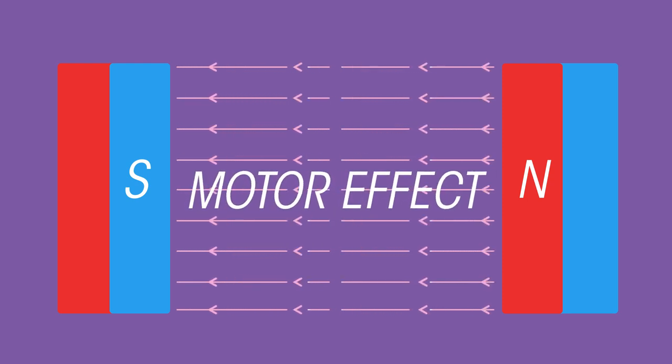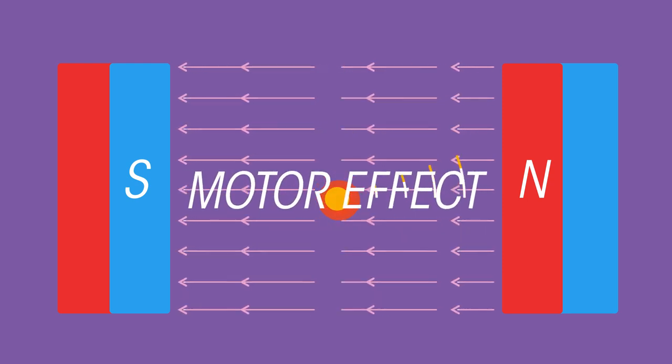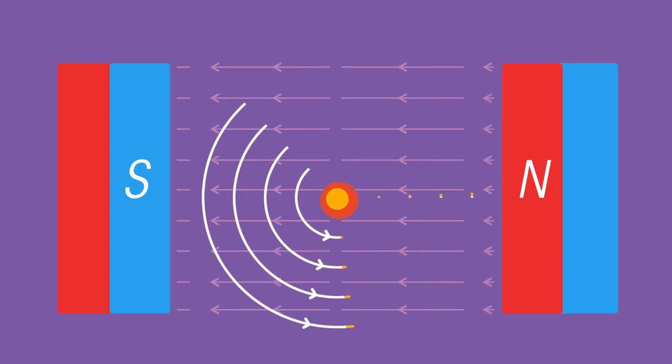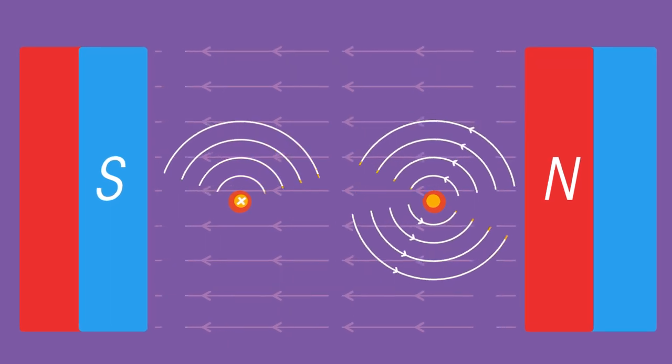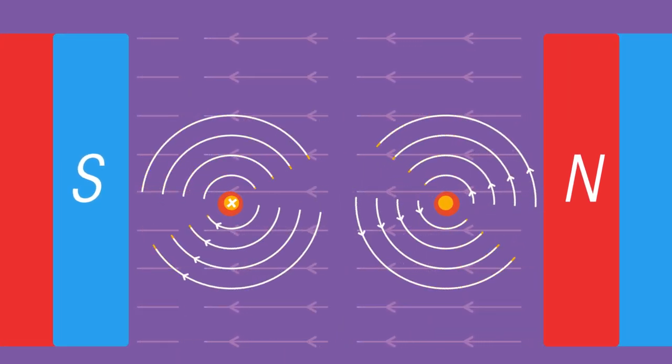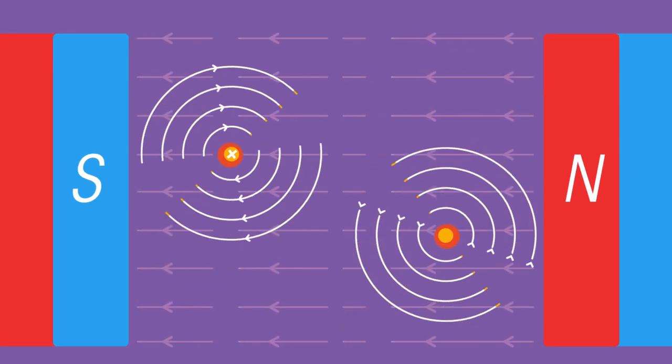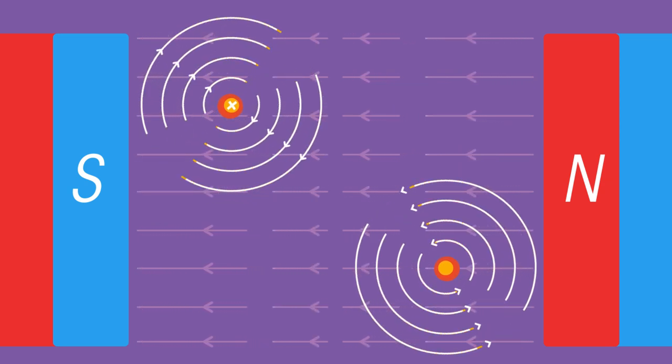This is the motor effect. Now reverse the current. This experiences a force in the opposite direction. Now place both wires in the same field. One wire will be pushed up, the other down, but we don't have circular motion yet.